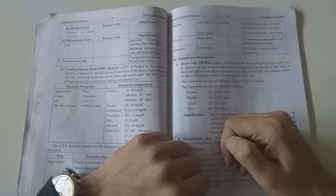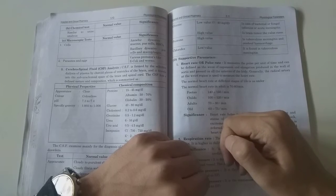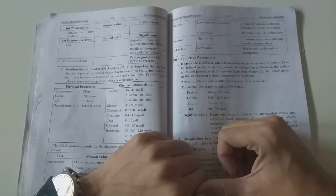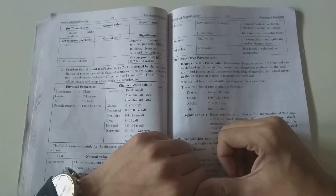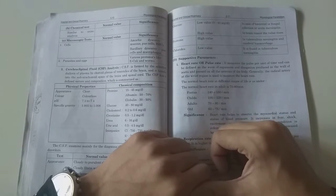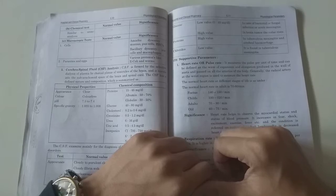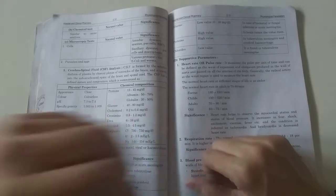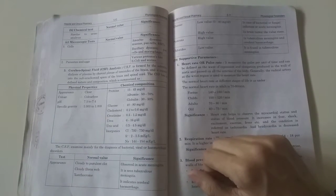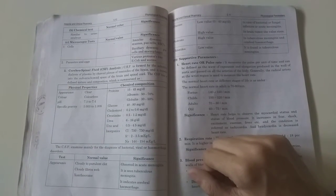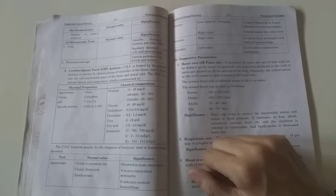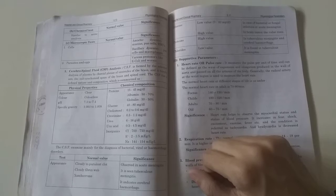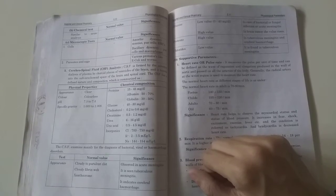The CSF has a defined nature and composition. The physical-chemical properties include appearance which is clear, color is colorless, pH is 7.3 to 7.4, and specific gravity is 1.003 to 1.008.